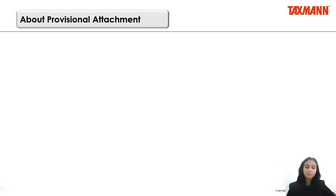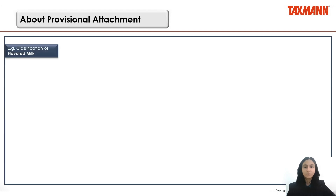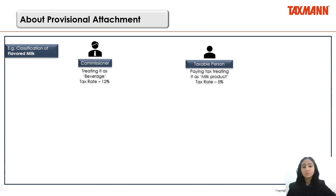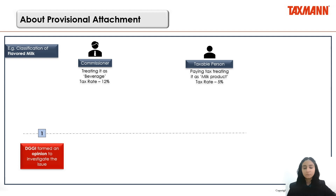I will start with a recent case where DGGI has been issuing show cause notices to taxpayers in relation to the classification of flavored milk. A taxable person is paying tax at the rate of 5% treating flavored milk as a milk product, whereas the Commissioner is of the opinion that the tax rate should be 12% and flavored milk should be considered as a beverage. DGGI formed an opinion that investigation should be carried out and then initiated the investigation.